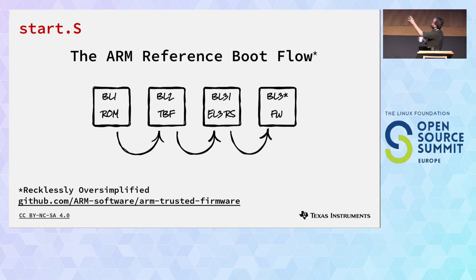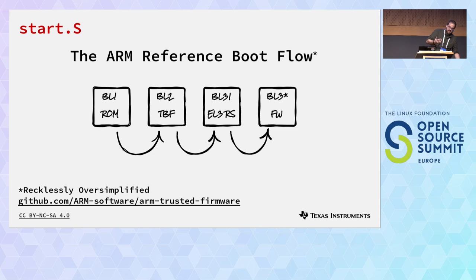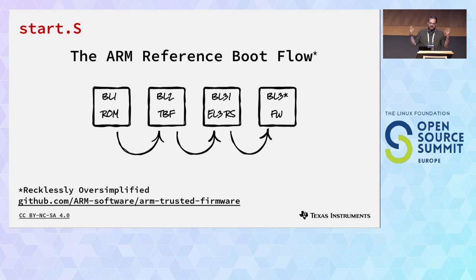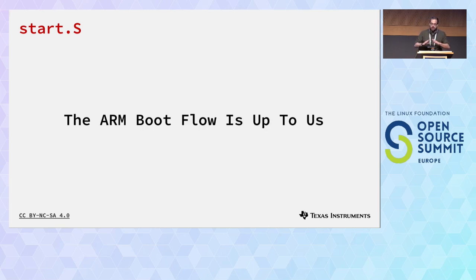Depending on the chip, you have BL3-1, which is exception-level 3 runtime services, and then BL3-2, BL3-3 for your secure OS and application OS. It's really this creativity that ARM gives manufacturers — why I consider it chaos and also a blessing. It's up to manufacturers like us at TI to implement whatever we want. We pick and choose any one of these things, and that's usually where most of the differences between chips come from. Even though no one forces ARM manufacturers to follow standard flows, we kind of end up loosely following the same thing.